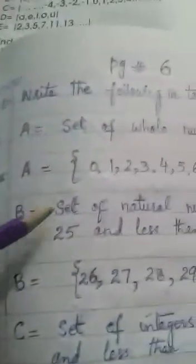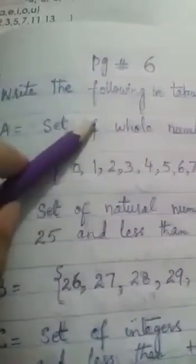Number 1: A = set of whole numbers less than 25. Answer: A = {0, 1, 2, ..., 24}.